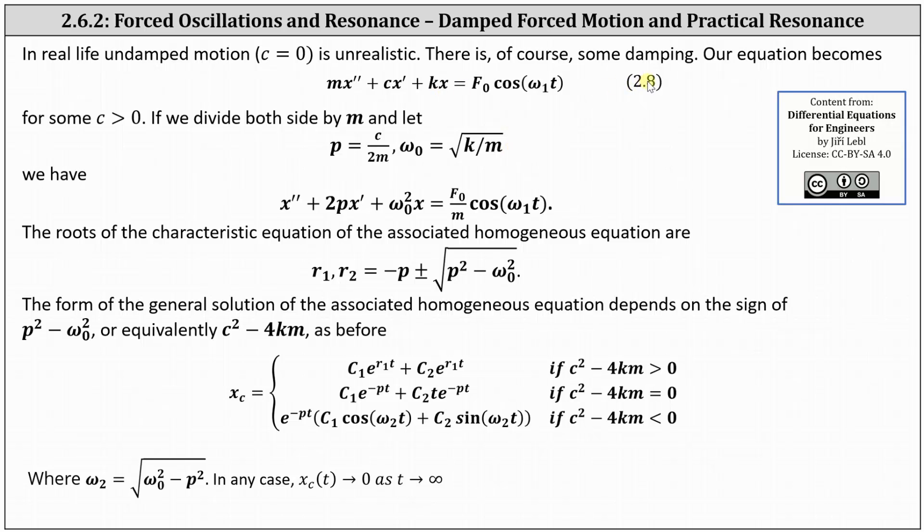we can write equation 2.8 as x double prime plus 2px prime plus the square of omega sub zero times X equals big F sub zero divided by M times cosine of omega one T.